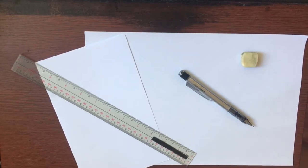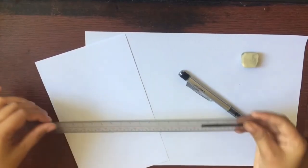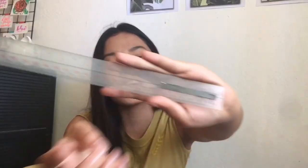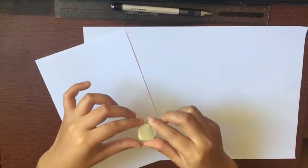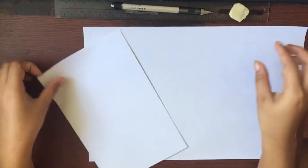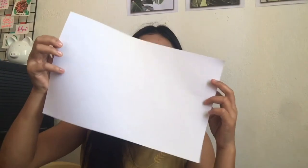These are the things that we need. First, we have here a ruler. As you can see, there's a black mark there because my name is there, but for privacy, I just put that black mark. Next is this mechanical pencil, this is 0.5. Next, we have this eraser.